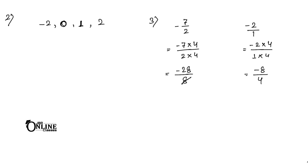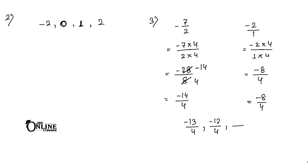Dividing -7/2 by 2/2 gives -14/4. So now we have -14/4 and -8/4 as our boundaries. The required rational numbers between them are -13/4, -12/4, -11/4, -10/4, or -9/4 — any three of them is your answer.